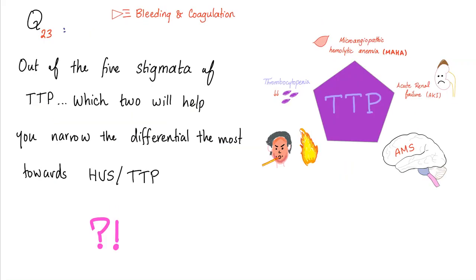Let me answer the question from the previous video. Out of the five stigmata of TTP, which two will help you narrow the differential towards HUS and TTP? The answer is: the most important two are microangiopathic hemolytic anemia and thrombocytopenia. Only these should make you suspect HUS or TTP.